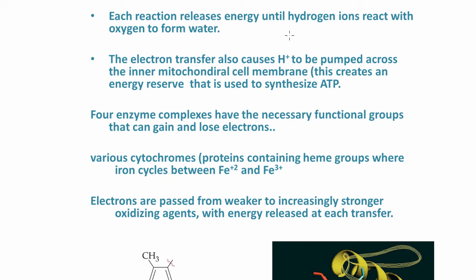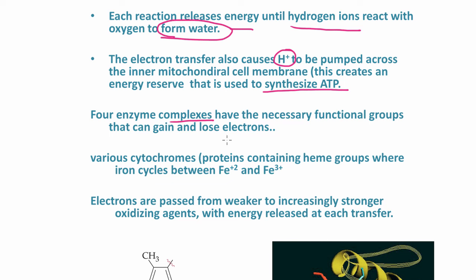In the electron transport chain, each reaction releases energy until hydrogen ions react with oxygen to form water. The electron transfer also causes hydrogen ions to be pumped across the inner mitochondrial membrane, creating an energy reserve that is used to synthesize ATP. There are four enzyme complexes that contain all the functional groups needed for these redox reactions to occur.